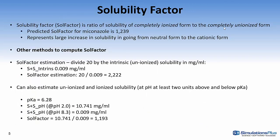The solubility factor is the ratio of the completely ionized form to the completely unionized form. The predicted solubility factor for miconazole is 1,239 so this represents a large increase in solubility going from the neutral form to the cationic form and that's important for dissolution in the stomach. There's a couple other methods to compute the salt solubility factor. If you know the solubility of the unionized form you can take 20 and divide it by that value. Here's an example using the intrinsic solubility predicted by ADMET predictor and taking 20 and dividing by that gives you about 2200, not too far off the predicted solubility.